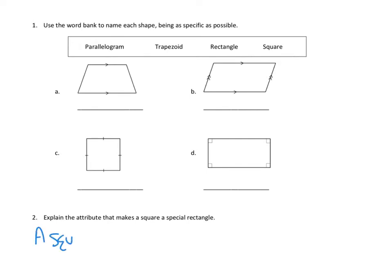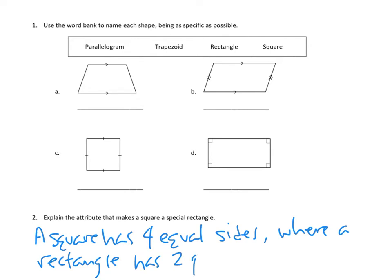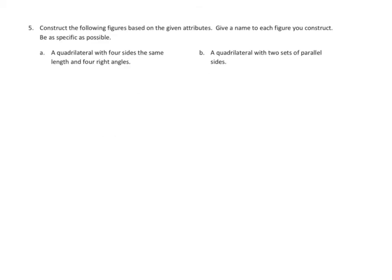A square has four equal sides, where a rectangle has... let's see, how can we say that? It has two pairs of two equal sides. Excellent, I think that reads well. So a square has four equal sides, where a rectangle has two pairs of two equal sides. That's the special attribute, because the angle part is all the same. Awesome.